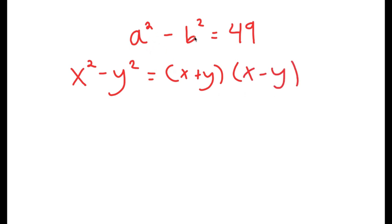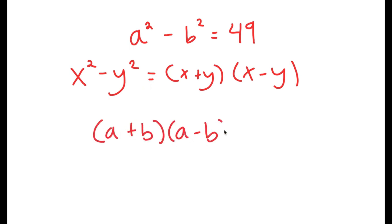In this case, for a squared minus b squared, a is x and b is y. So this turns into a plus b times a minus b is equal to 49.